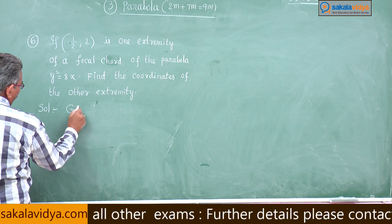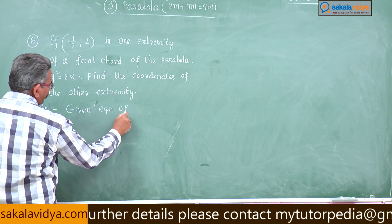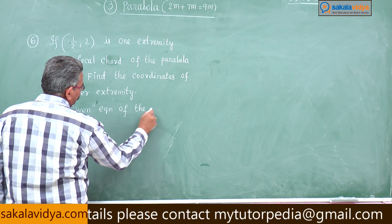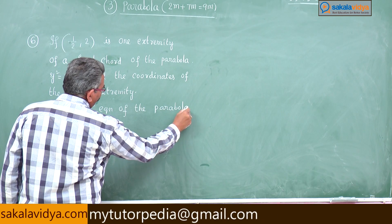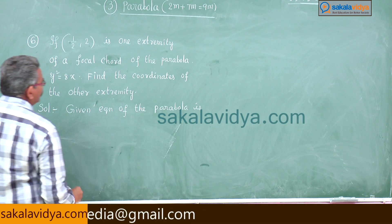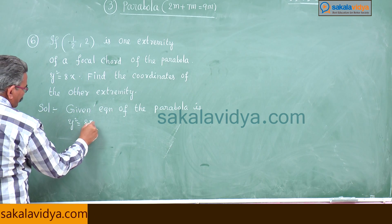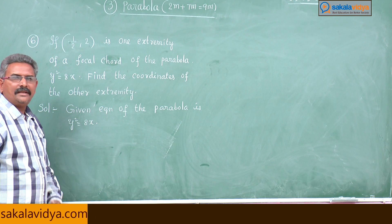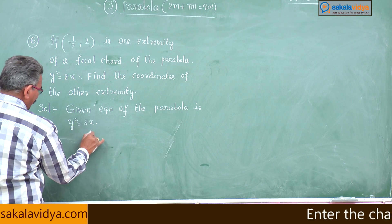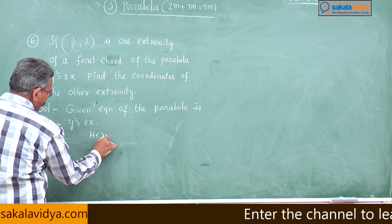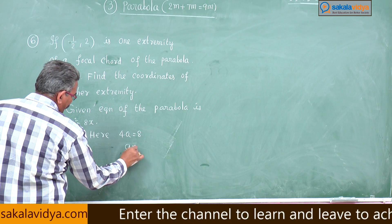Given equation of the parabola is y² = 8x. Comparing with y² = 4ax, here 4a = 8, so a = 2.